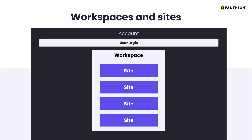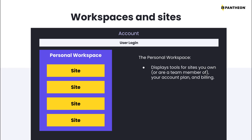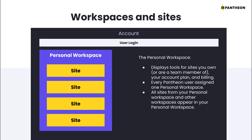There are two types of workspaces on Pantheon: personal and professional. The personal workspace displays tools for the sites you own or are a team member of, your account plan, and billing for sites you own. You have exactly one personal workspace on Pantheon. Every Pantheon user is assigned one personal workspace regardless of whether they have other workspaces assigned to them as well. All sites you create, as well as individual sites from workspaces you've been invited to collaborate on, will be in your personal workspace.